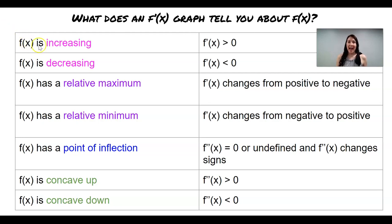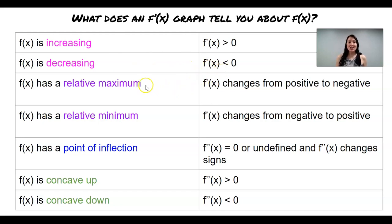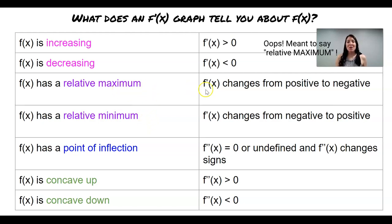f of x is increasing when f prime of x is positive, and conversely f of x is decreasing when f prime of x is negative. A common question is about relative maxima and minima. There is a relative maximum on the graph of f of x when f prime changes from positive to negative, and vice versa for a relative minimum.